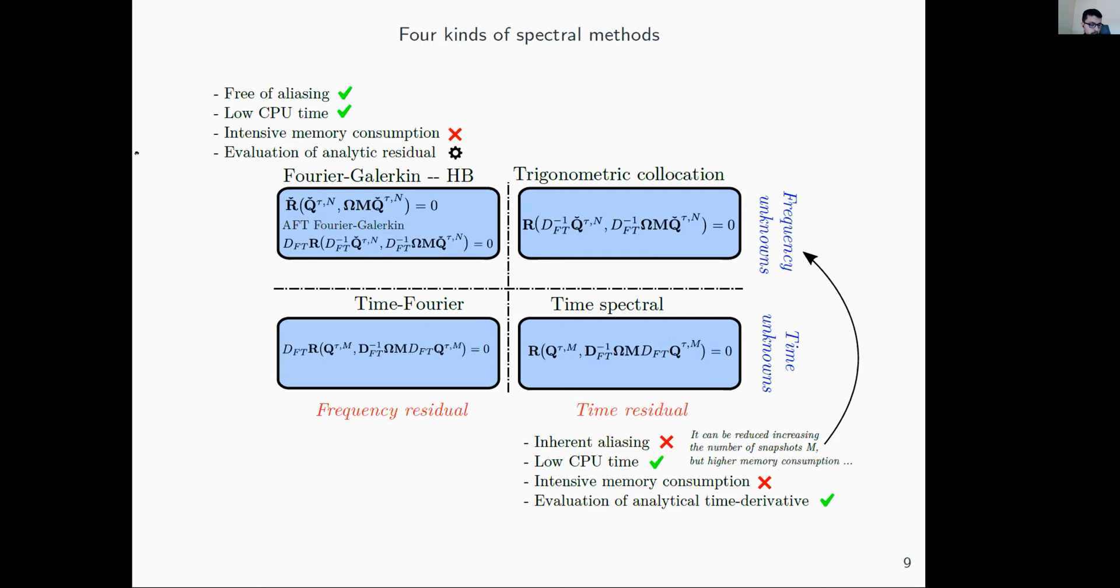Each method possesses advantages and disadvantages. The Galerkin or harmonic balance method is free of aliasing because the residual is evaluated analytically without using discrete Fourier transforms. Discrete Fourier transforms are evaluated fast but add aliasing errors because whenever you evaluate a non-linear function and apply a discrete Fourier transform, the Fourier basis being gated pollutes the signal you compute.